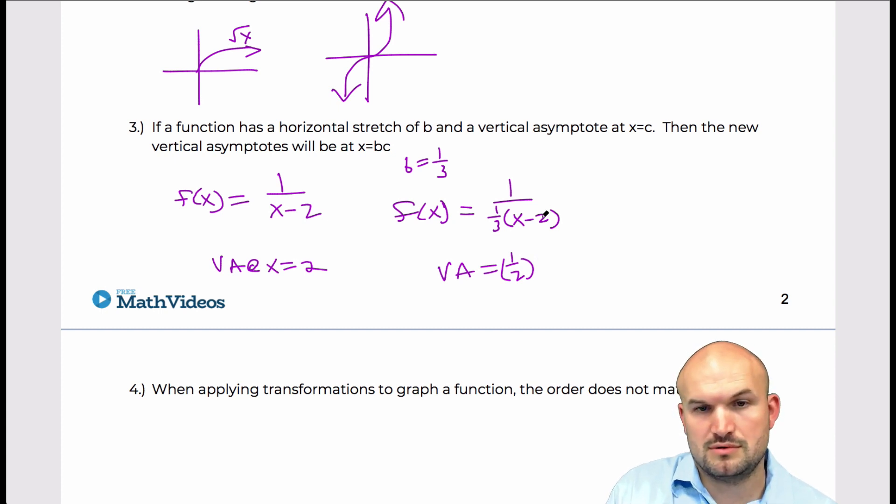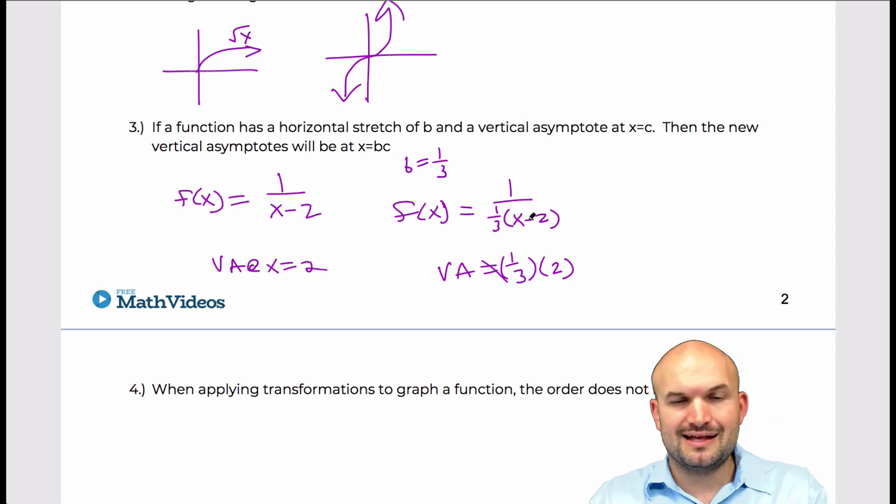One third times 2. And we can see that that is incorrect, right? Because if you look at this function with this vertical stretch, the undefined values here is still going to be at 2. So my vertical asymptote is still at 2.